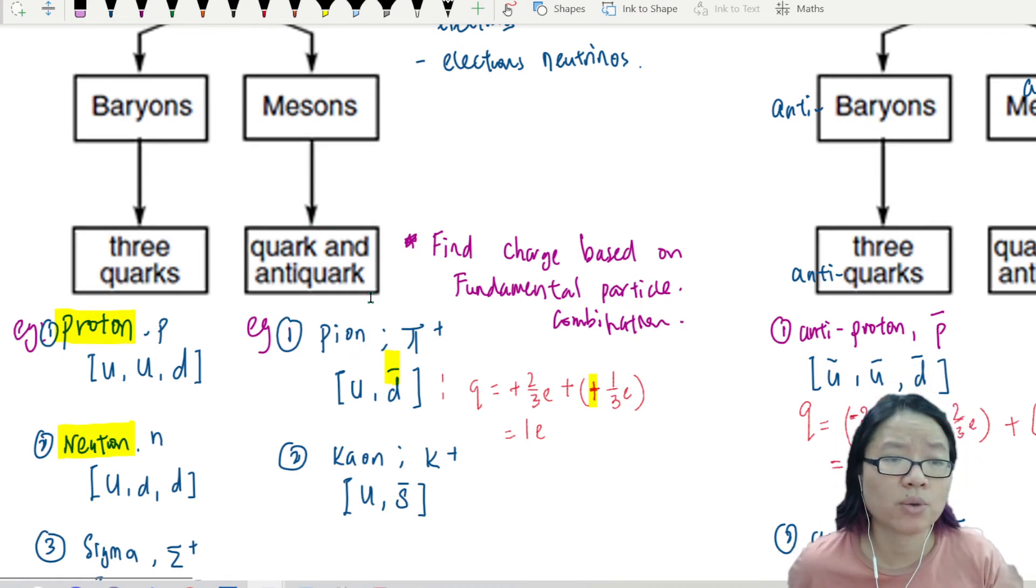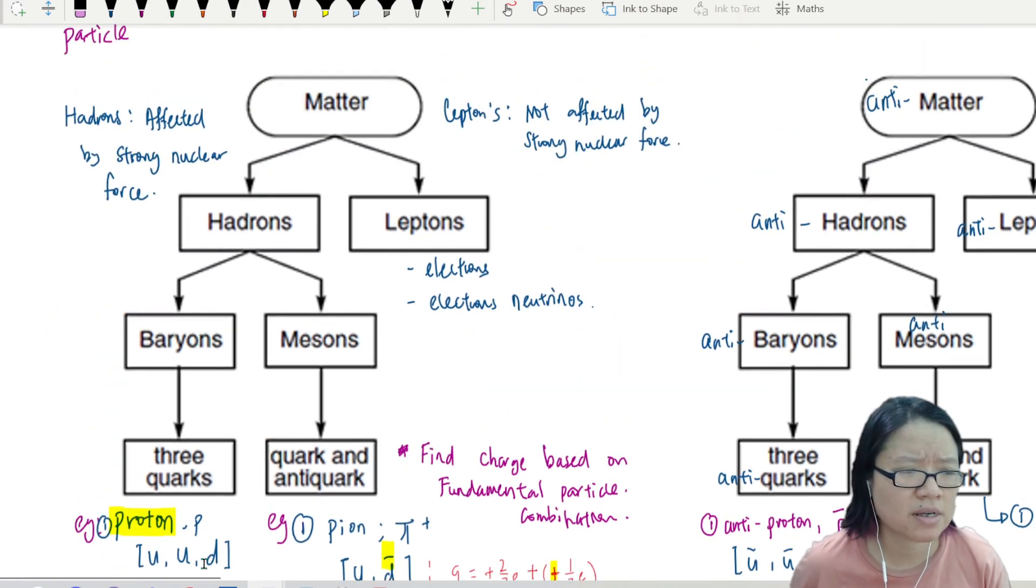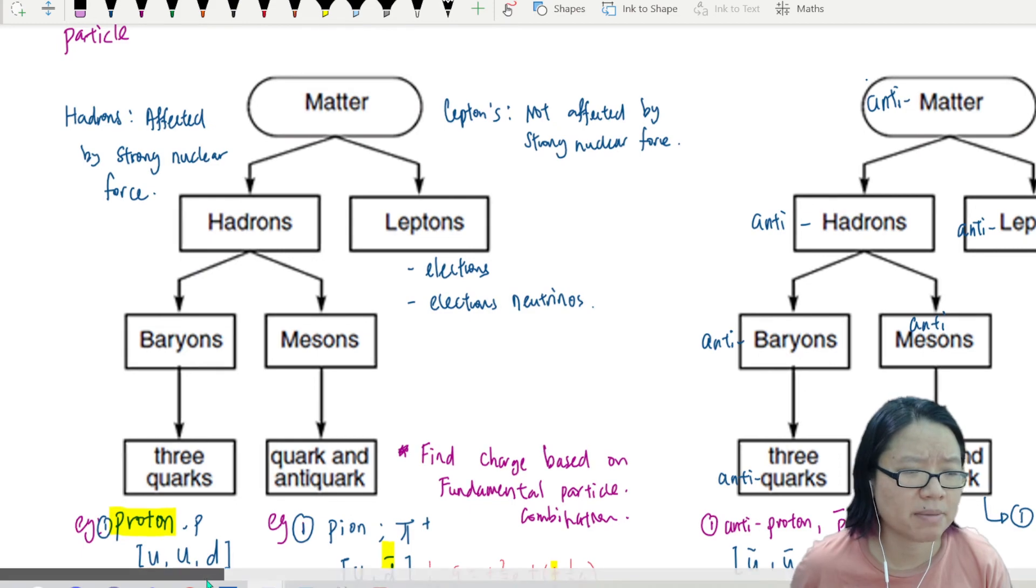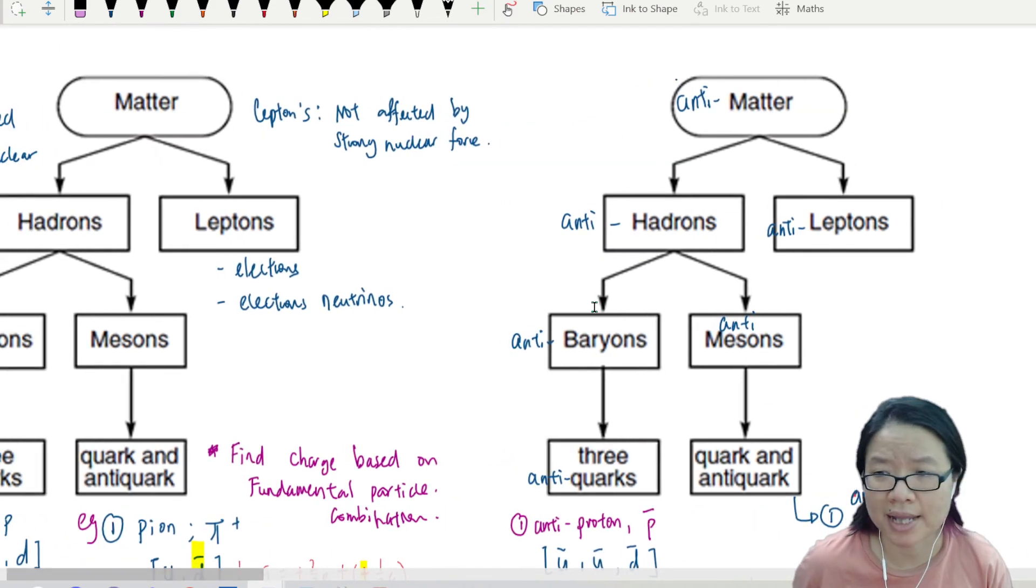For mesons, it is one quark and one anti-quark. Okay, so you sort of need to know the structure of this. And also the fact that we have anti-matter as well. And because of this, we can anti all of these things.